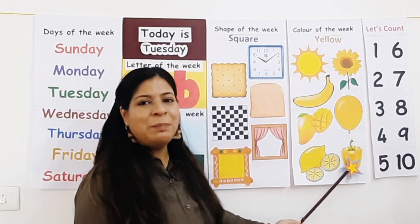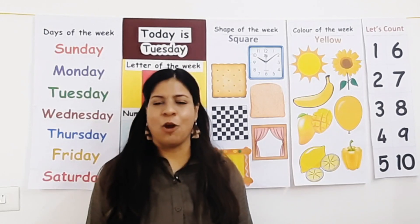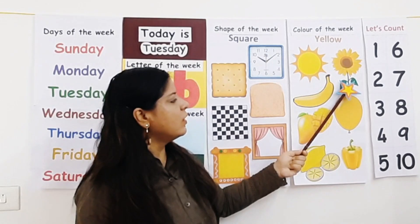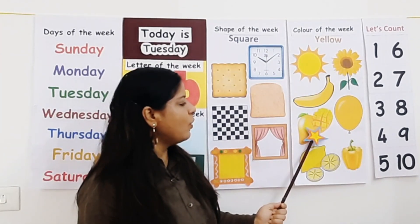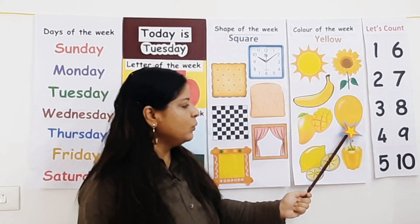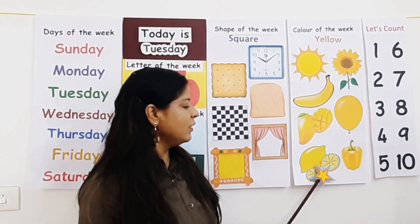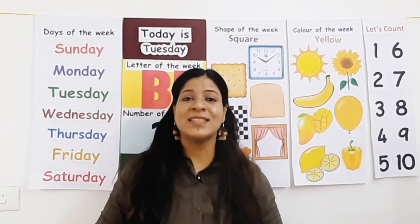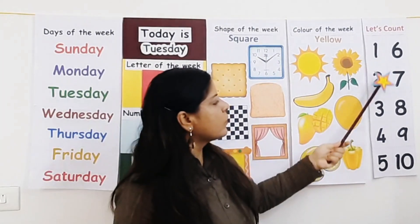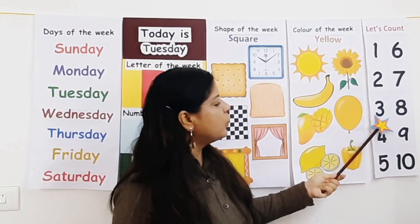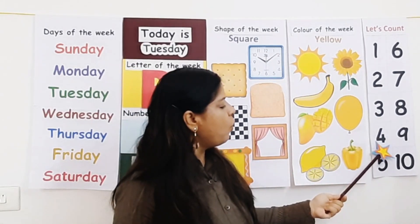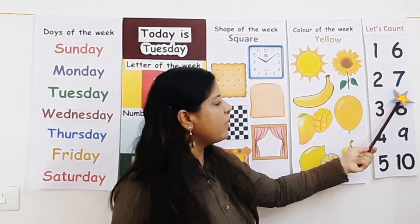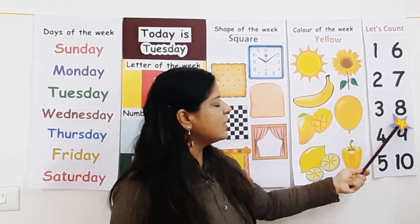Yellow bell pepper. Now say along with me: yellow sun, yellow sunflower, yellow banana, yellow mango, yellow balloon, yellow lemon, yellow bell pepper. Well done! Now let's count 1 to 10: 1, 2, 3, 4, 5, 6, 7, 8, 9, 10.